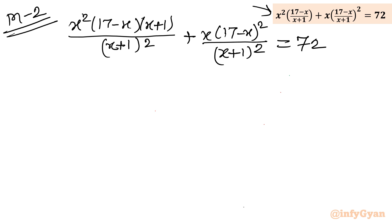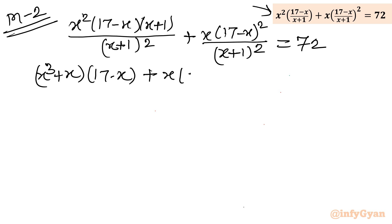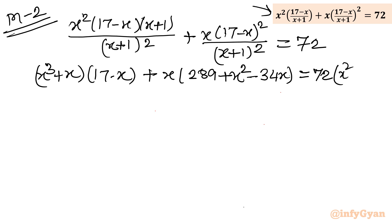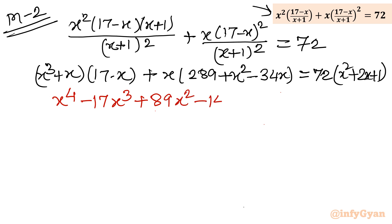Expanding and multiplying the right-hand side by (x plus 1)², then expanding using the distributive law, we obtain the quartic equation: x⁴ minus 17x³ plus 89x² minus 145x plus 72 equals 0. Let me put this in a box because this equation is the most important one.